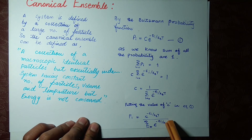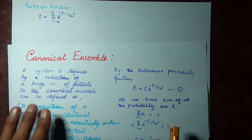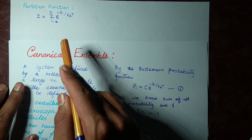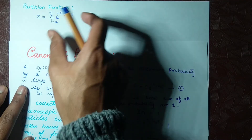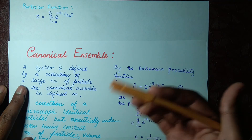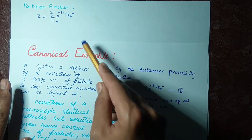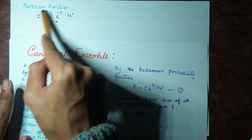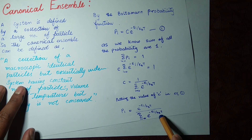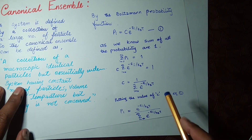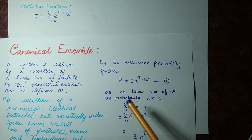You can see a term in the denominator of the probability function — this term is called the partition function, and it is the most important function in statistical mechanics. It is the backbone of statistics, because from this partition function you are going to find out all the state functions. This is the partition function for the canonical ensemble; for the grand canonical ensemble there will be a slight change.